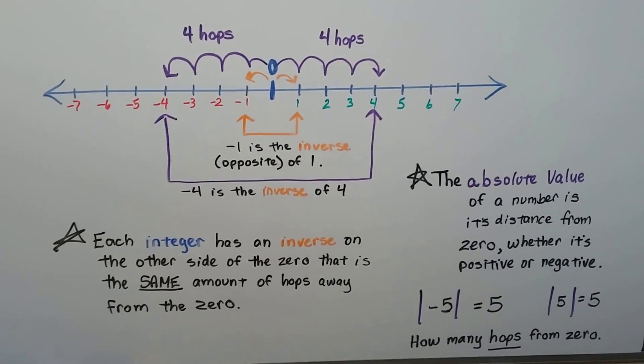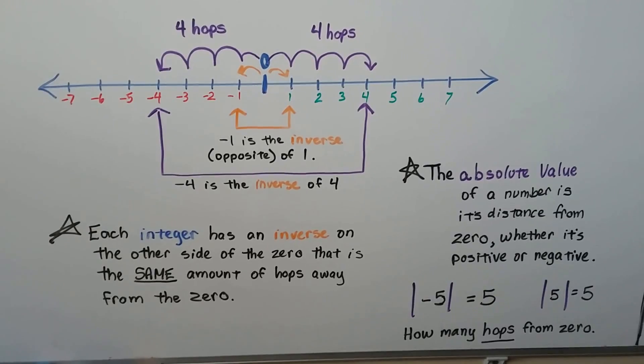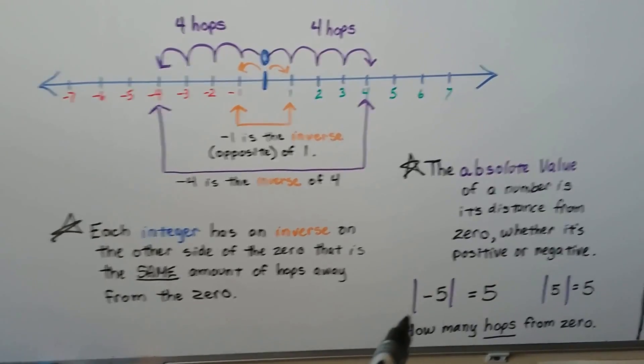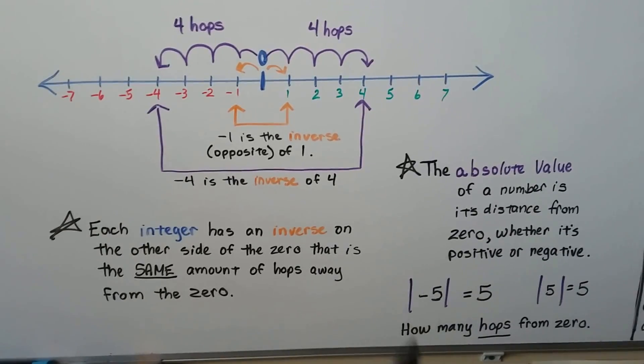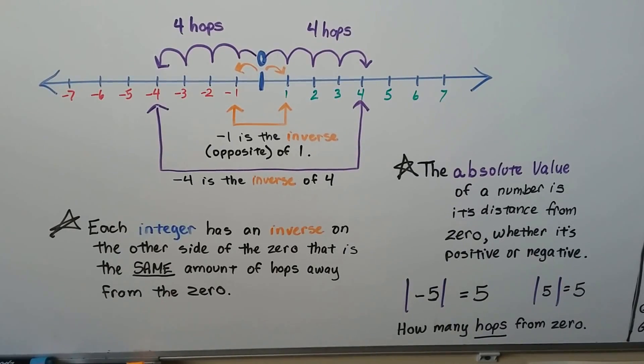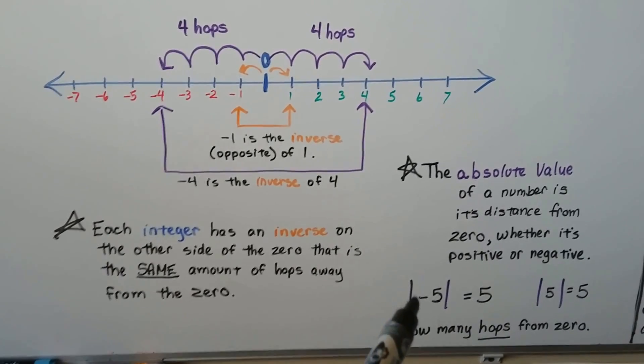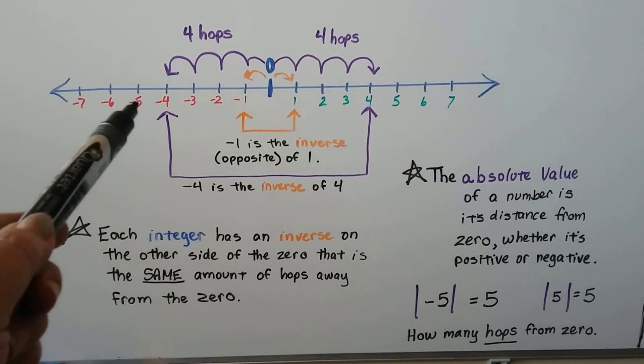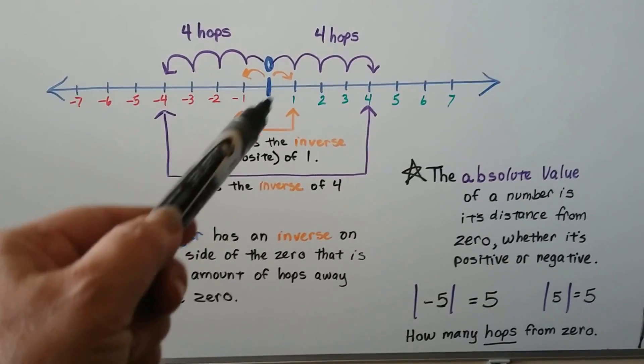The absolute value of a number is its distance from 0. So you're going to see some numbers that might have bars like this on each side of them. That means the absolute value of negative 5. That means how many hops from 0 is negative 5? It's 1, 2, 3, 4, 5 hops away.